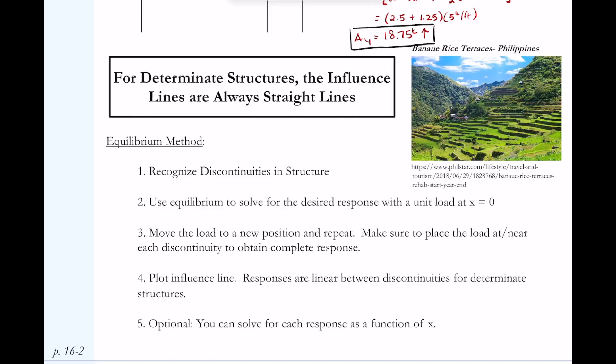Welcome back. In this video, we will be exploring how to plot influence lines using the equilibrium method. From previously, we learned that for determinate structures, the influence lines are always straight lines. What this enables us to do with the equilibrium method is to recognize discontinuities in our structure. We'll keep moving our unit load around and use equilibrium to solve for the desired response. We'll move the load to new positions, especially right before and right after the discontinuity, and then we'll be able to plot the influence line.